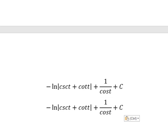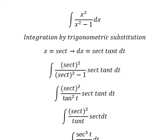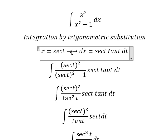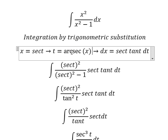About t, we need to return back to the first one in here. We get t equal to arcsecant of x. So we change t into arcsecant of x.